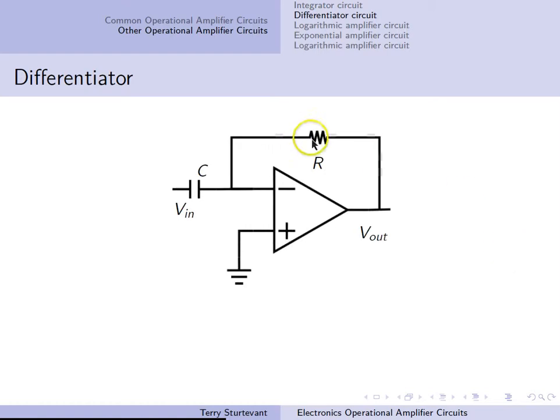In the differentiator circuit, the capacitor has replaced the input resistor on the inverting amplifier. The output is the derivative of the input over time. The output is minus RC times the derivative of VIN DT.